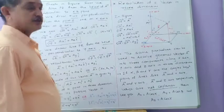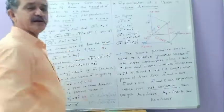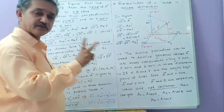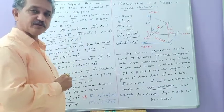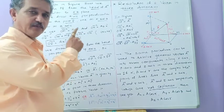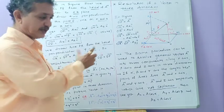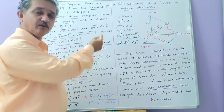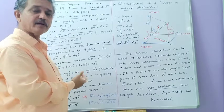In our latest series, the next topic is resolution of a vector in three dimensions. Last time we saw the resolution of a vector in two dimensions — that means along the x-axis and y-axis. In two dimensions there are only two vector components: the x-component and the y-component.